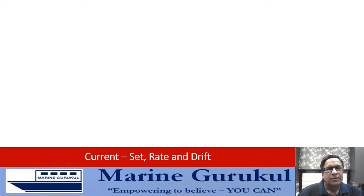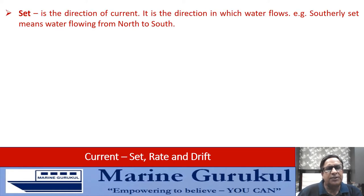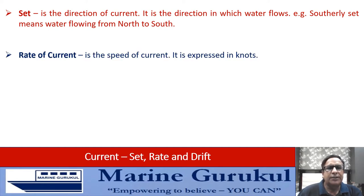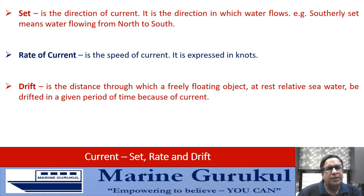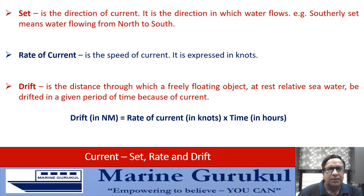Before discussing the effect of current, we need to understand the terms used to describe it. The direction of current is called the set — the direction in which the water flows. For example, current setting south or 180°T means water flows from north to south. The rate of current is its speed, expressed in knots. The drift is the distance through which a freely floating object is carried in a given period: drift = rate (knots) × time (hours), giving drift in nautical miles.